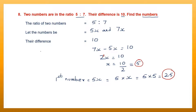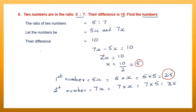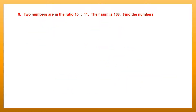The second number is 7x, that is 7 into x. x is 5, so 7 fives are 35. We have found both numbers: first number is 25 and the second number is 35. If you take the difference, you will see that it is 10.